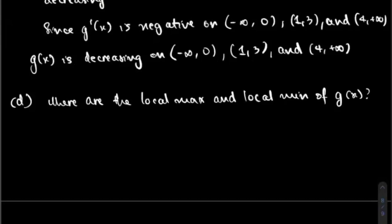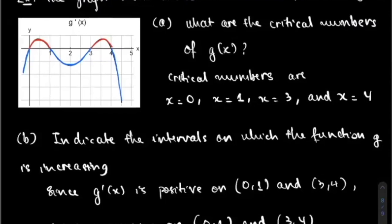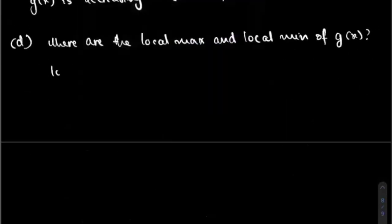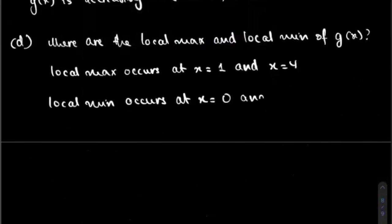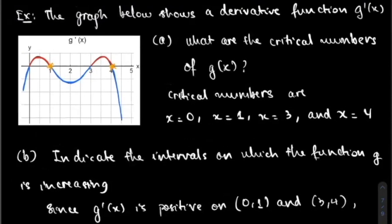For local maximum and local minimum: the local maximum is where f prime changes from positive to negative. At X equal to one, f prime changes from positive to negative — that's a local maximum. At X equal to four, the derivative also changes from positive to negative, so local maximum occurs at X equal to one and X equal to four. The local minimum occurs at X equal to zero and X equal to three, because at those points the derivative changes from negative to positive.